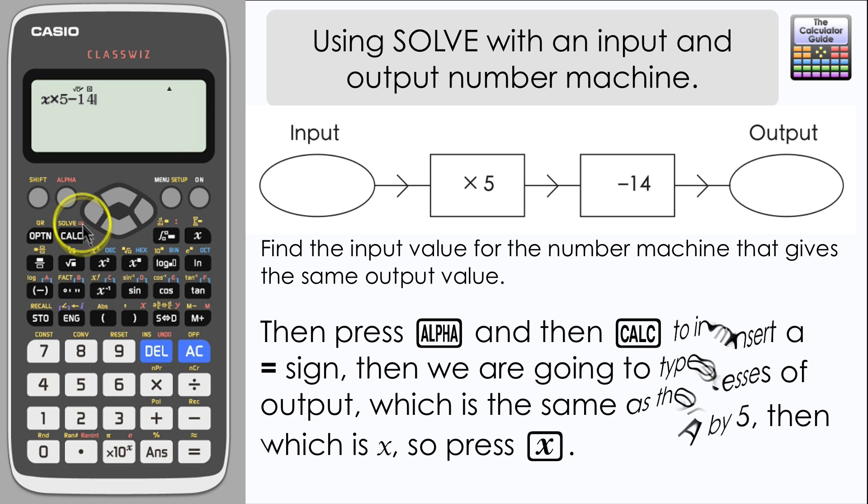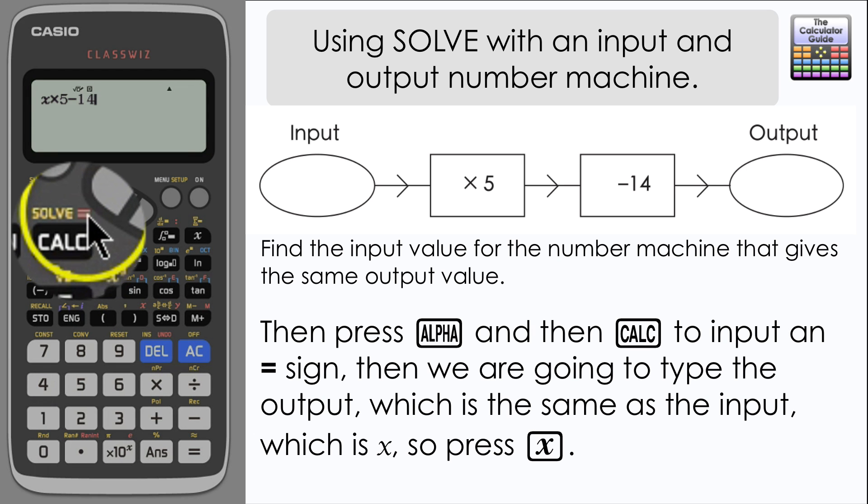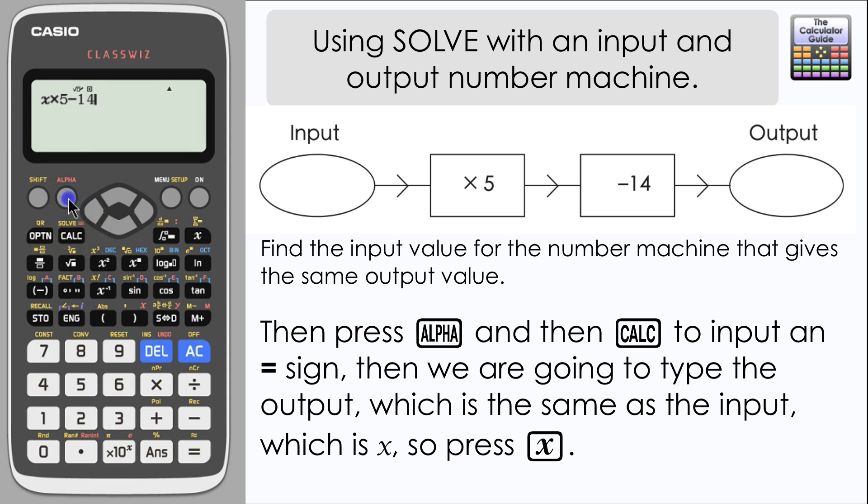We're going to insert an equals here because we want to go to our output. So press alpha and calc to get an equal sign on your calculation line, and then we want the same output as we had input which was the letter X, so I'm just going to press the letter X again.